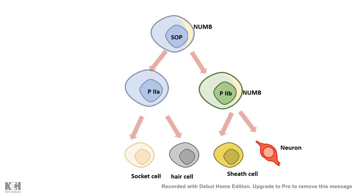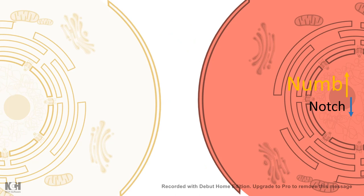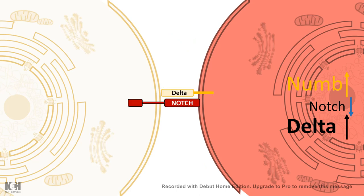It turns out that in the sensory organ progenitor, a protein called Numb is at a very high level and is asymmetrically distributed. It is also propagated via asymmetric division: Numb is distributed to one region of the progenitor, so one daughter gets a high level of Numb and the other gets a low level. Numb inhibits Notch, so in the neuron precursor, the Numb level is pretty high, Notch level is low, and therefore the Delta level is high.